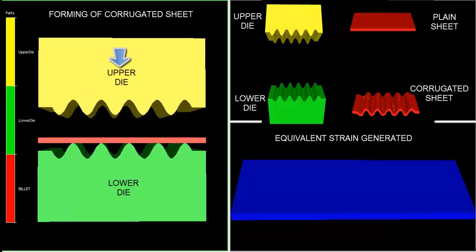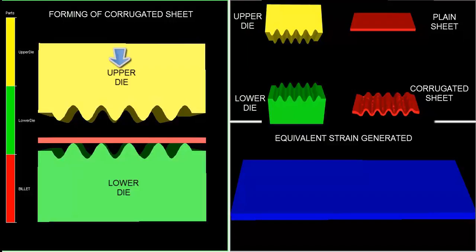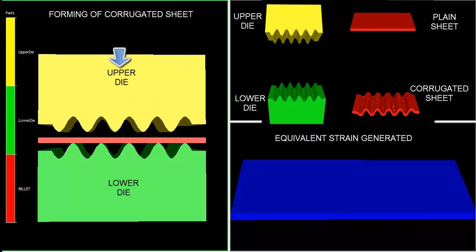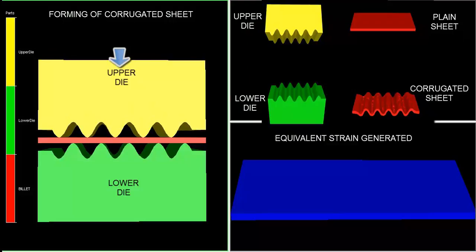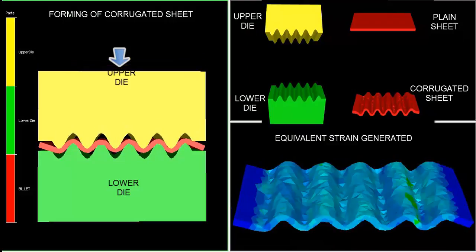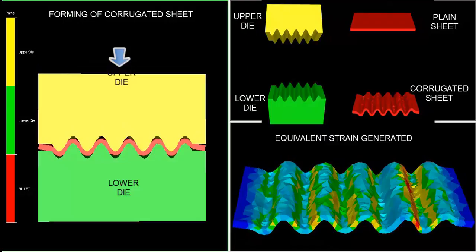The billet is meshed in finite elements to have detailed analysis of the forming. A hydraulic press is used for deformation. In the right-hand top side of the simulation video, one can see the upper die or punch, the billet, and the lower die.